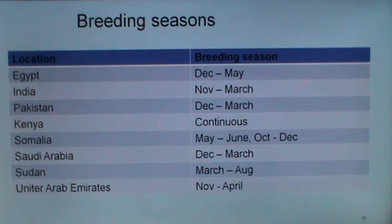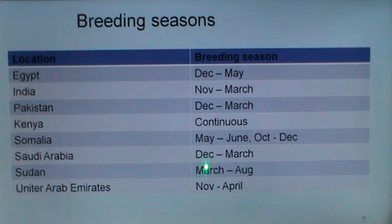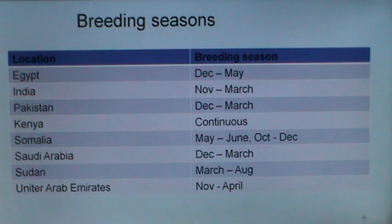In Somalia, the breeding season is May to June and October to December. In Saudi Arabia it is December to March. In Sudan it is March to August, and in the United Arab Emirates November to April. In African countries like Kenya, Somalia, and Sudan the breeding season differs because of the uniformity of daylight length and depends on rainfall.